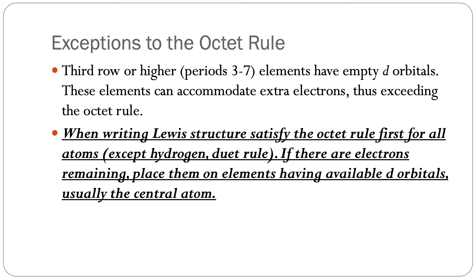Third row or higher, periods 3 through 7 elements, have empty d orbitals. These elements can accommodate extra electrons, thus exceeding the octet rule.